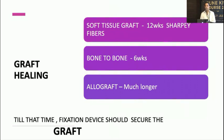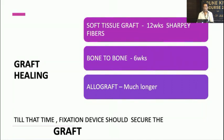Graft healing takes varying time depending on the graft type. When using a soft tissue graft like hamstring grafts, healing takes about 12 weeks with the help of Sharpey's fibres. Bone-to-bone grafts like BTB heal in about six weeks. Allografts take much longer. Until healing is complete, the fixation device must secure the graft well enough.